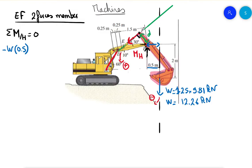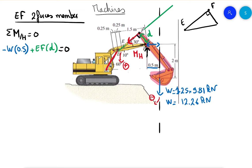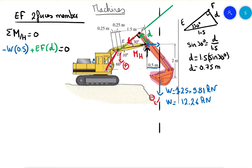Calling that perpendicular distance D, the moment equation becomes: minus W times 0.5 plus EF times D equals zero. To find D, we look at the triangle along EF — the long side is 1.5 m and the angle is 30 degrees — so sine 30° equals D divided by 1.5, giving D equals 1.5 times sin(30°) equals 0.75 m.